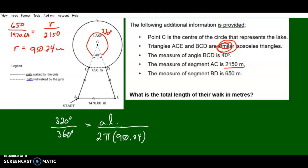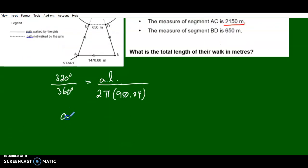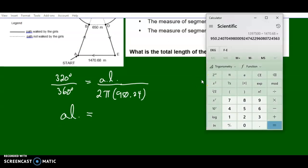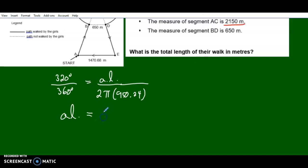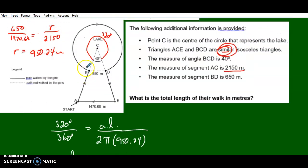That's almost the whole way around. The arc length is what we're looking for, divided by the circumference, which is 2 times pi times r, 950.24. So the arc length is 950 times 2 times pi times 320 divided by 360, equals 5307.1 meters. That's 5 kilometers.